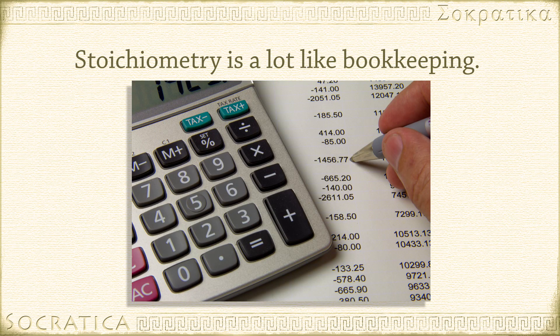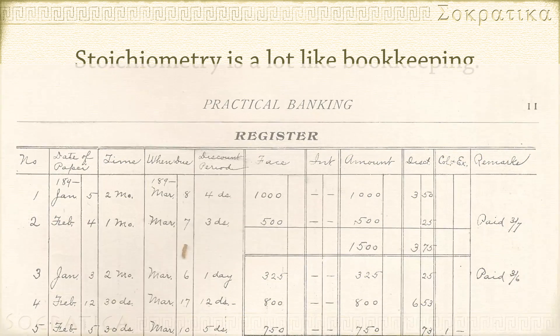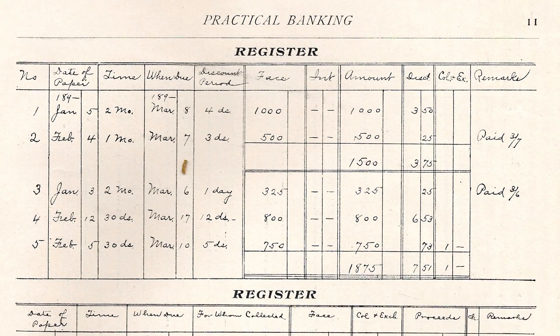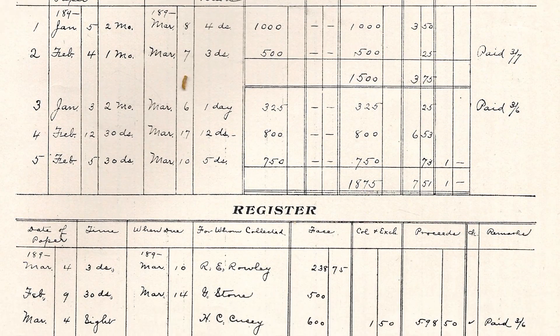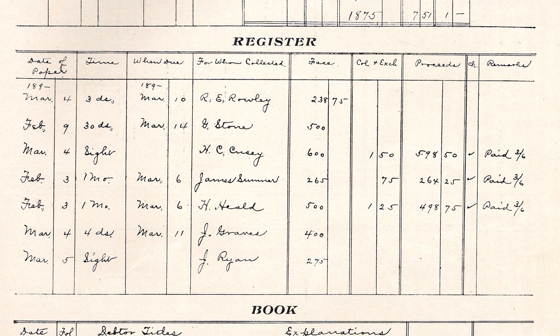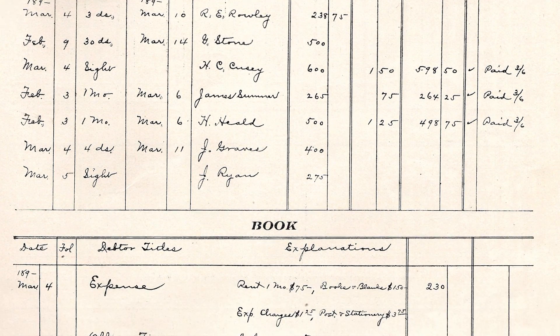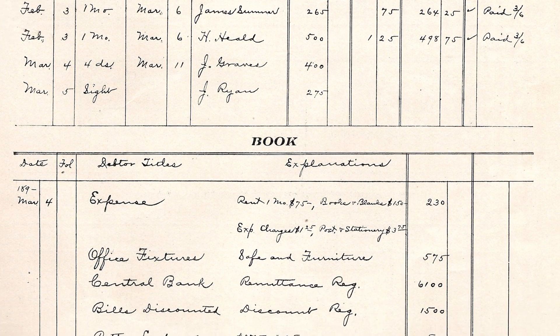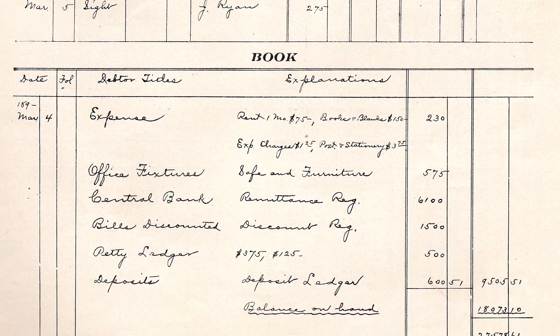Stoichiometry is a kind of calculation in chemistry — it's sort of like bookkeeping. Stoichiometry lets you figure out how much of a substance is used up or produced in a chemical reaction.